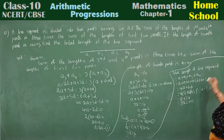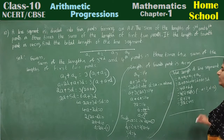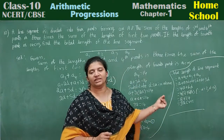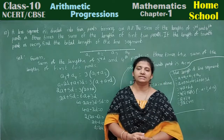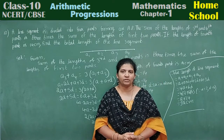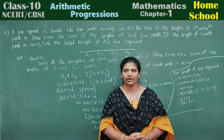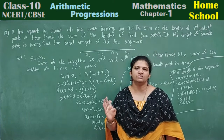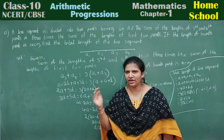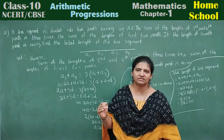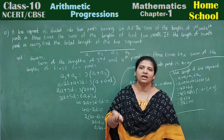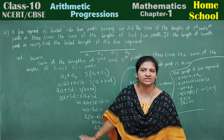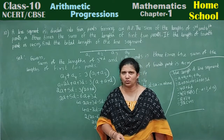Therefore, the total length of the line segment is equal to 32 centimeters. The same problem can also be done another way — using four terms written as a minus 3d, a minus d, a plus d, and a plus 3d. Either way you can proceed the problem.